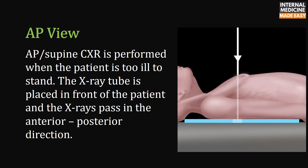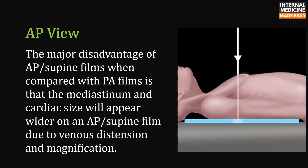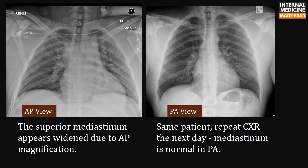The AP or supine chest x-ray is performed when the patient is too ill to stand. The x-ray tube is placed in front of the patient and the x-rays pass in the anterior-posterior direction. The major disadvantage of AP or supine films compared with PA films is that the mediastinum and cardiac size will appear wider due to venous distension and magnification. A left-sided AP film shows widened superior mediastinum; repeat PA view the next day reveals the mediastinum is normal.